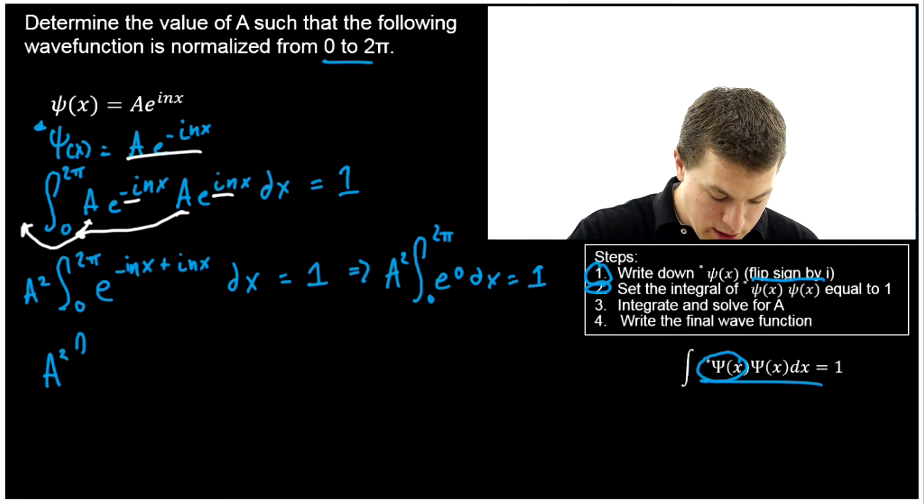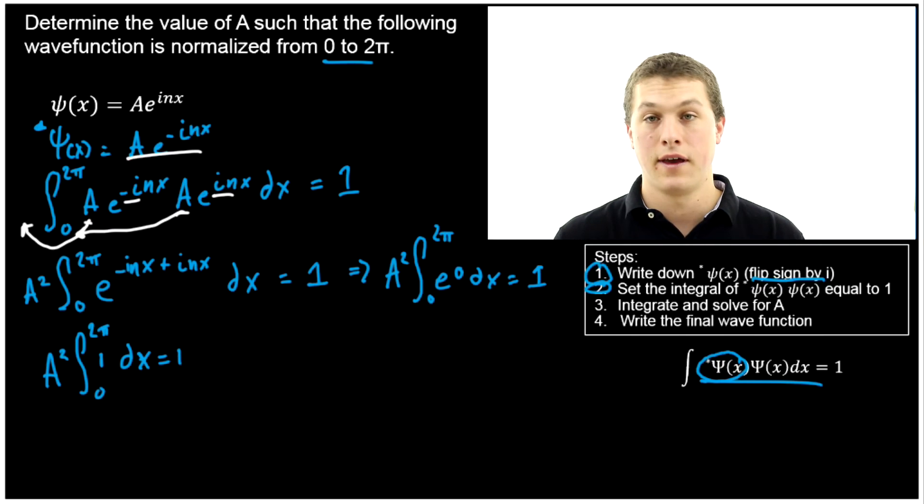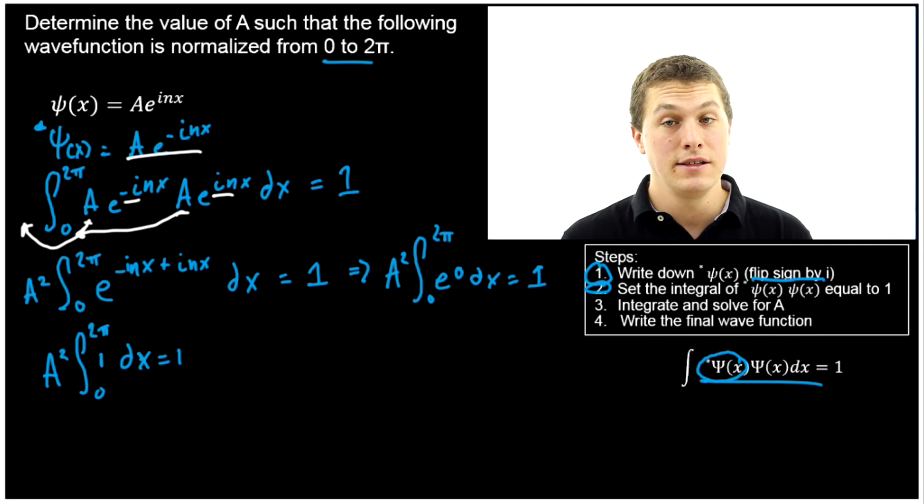And so that means we're going to get A² integral of one, zero to 2π, dx is equal to one. Now you see why maybe I chose this as a wave function. It's an easy one to integrate.